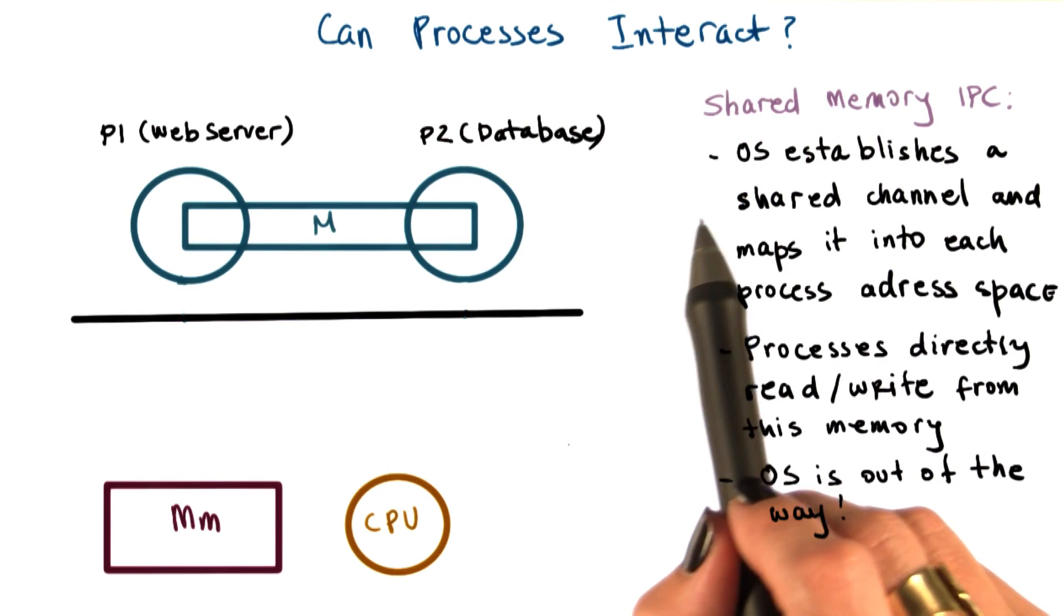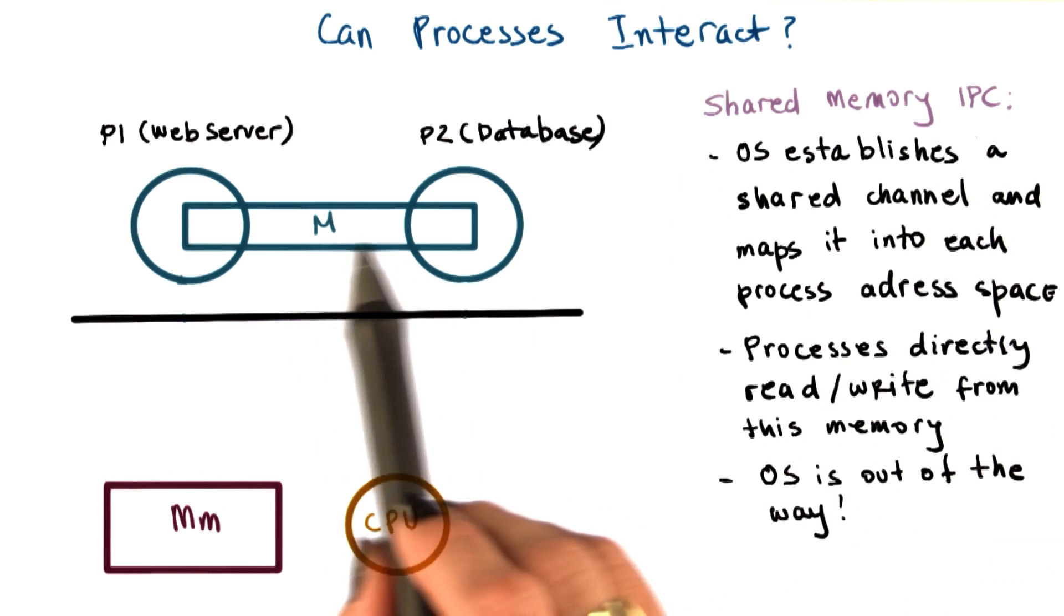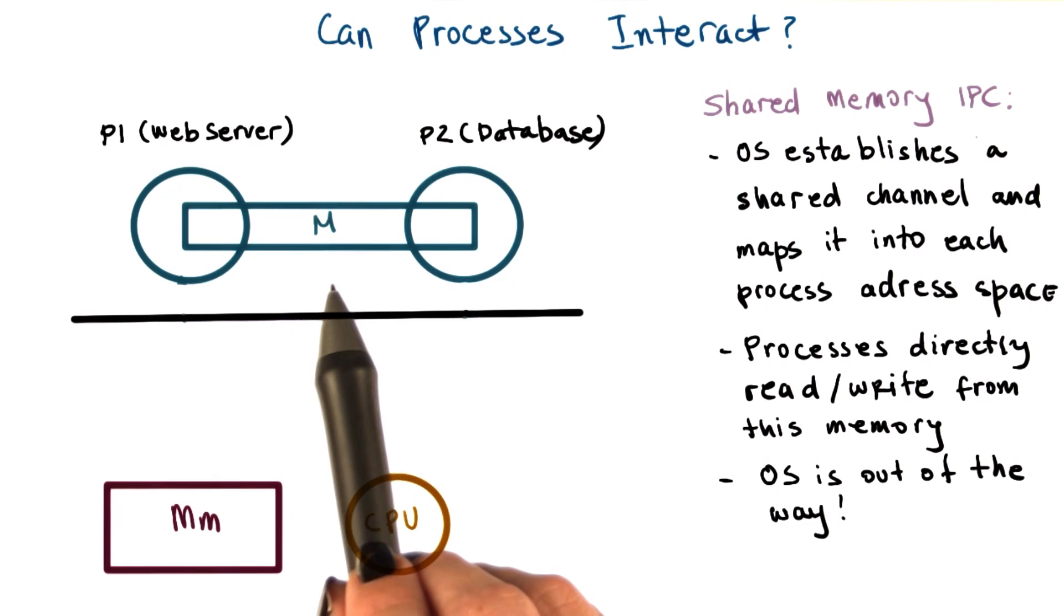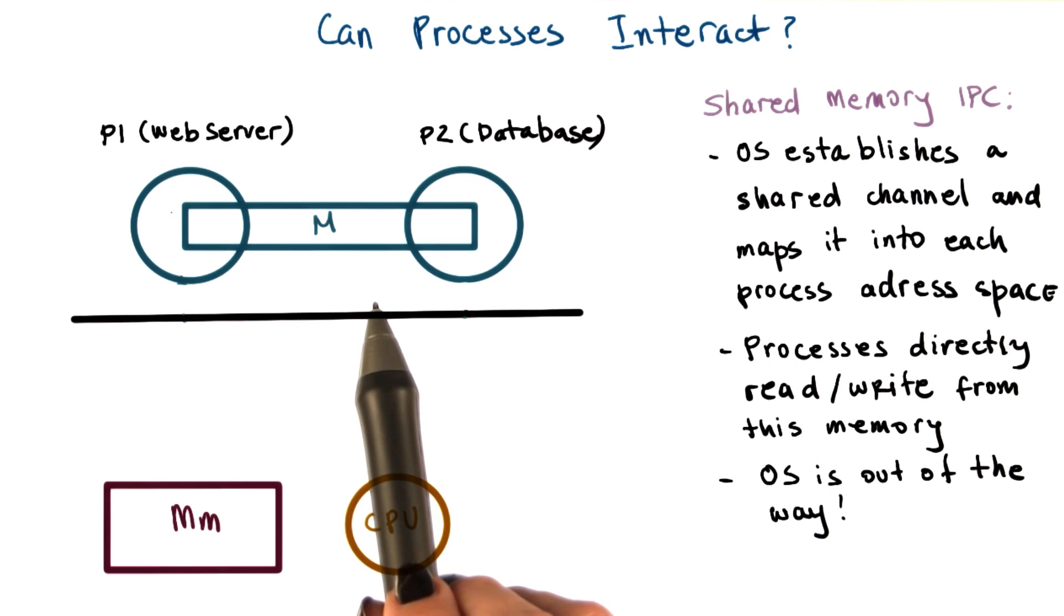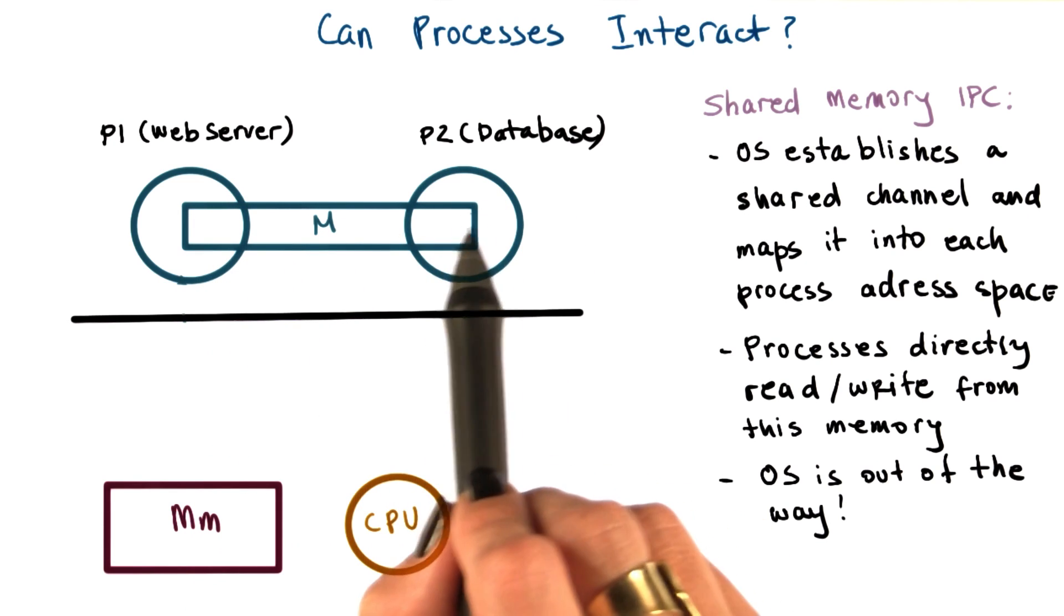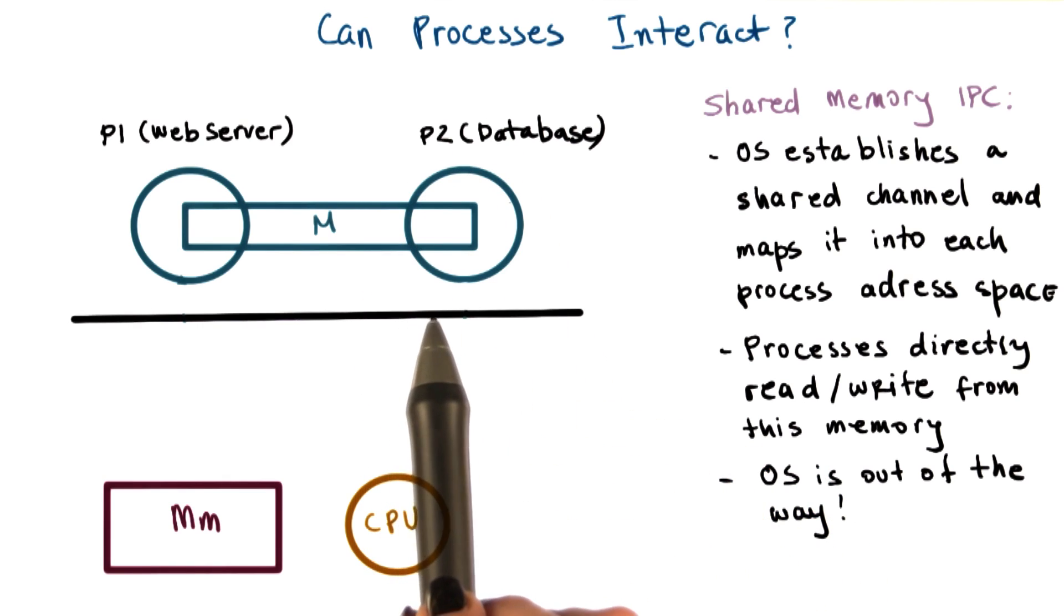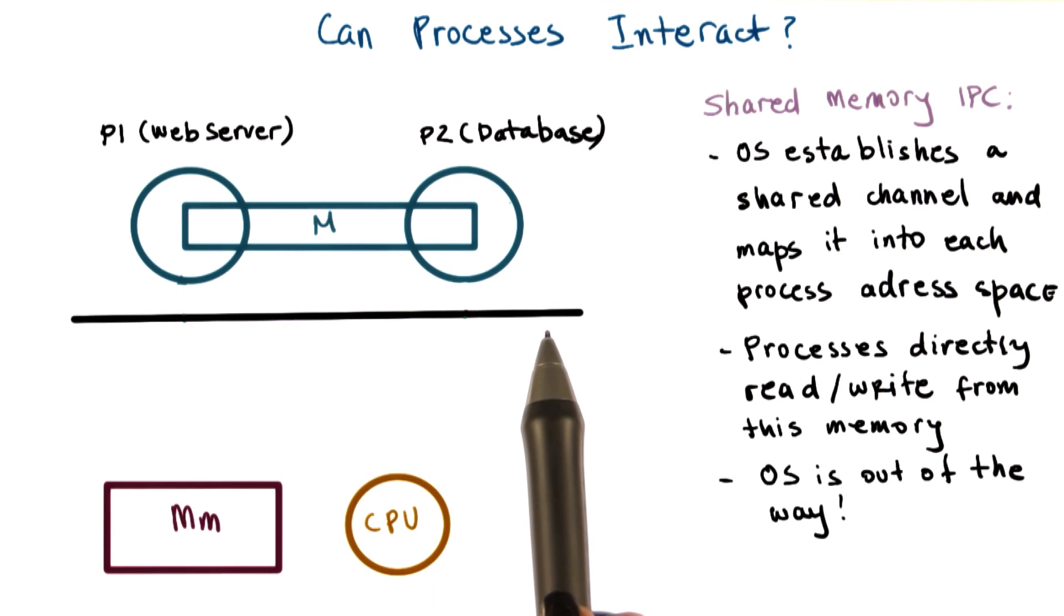The other type of IPC mechanism is what we call shared memory IPC. The way this works is the operating system establishes the shared memory channel, and then it maps it into the address space of both processes. The processes are then allowed to directly read and write from this memory as if they would to any memory location that's part of their virtual address space. So the operating system is completely out of the way in this case.